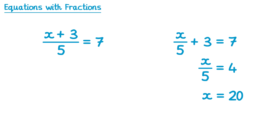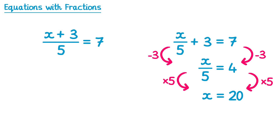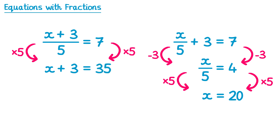This difference affects how we solve the equation. On the previous one we subtracted 3 first and then multiplied by 5. On this new question we do the opposite order: multiply by 5 first, then subtract 3. Multiplying by 5 on both sides cancels the 5 on the left, leaving x plus 3. On the right, 7 multiplied by 5 is 35. Then subtracting 3 from both sides gives us x equals 32.